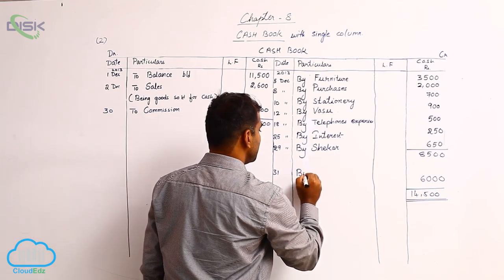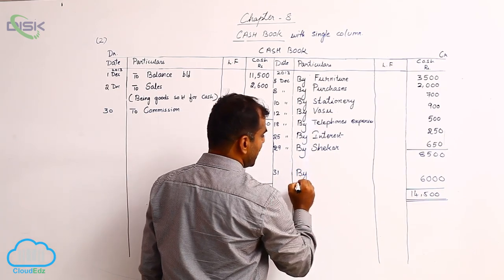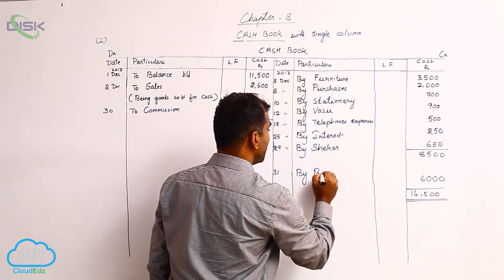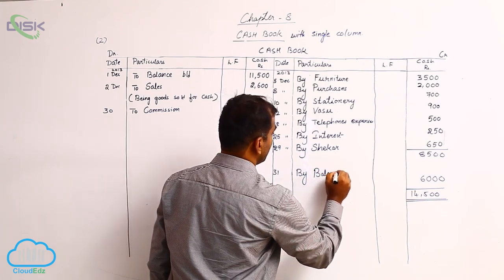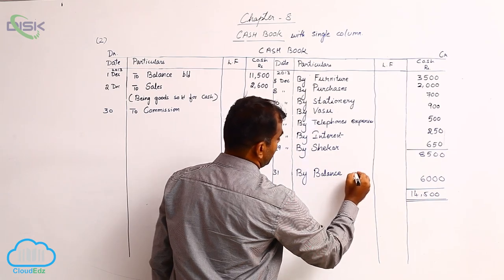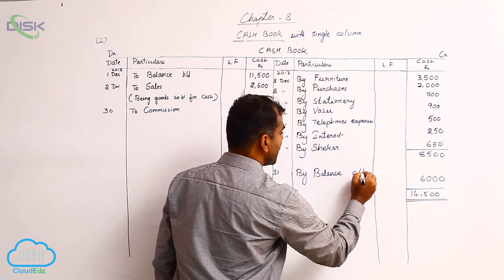So how to close the ledger. On the credit side we are writing the balance, therefore by balance. Since we are closing the ledger or the cash book, we write it as carried down.